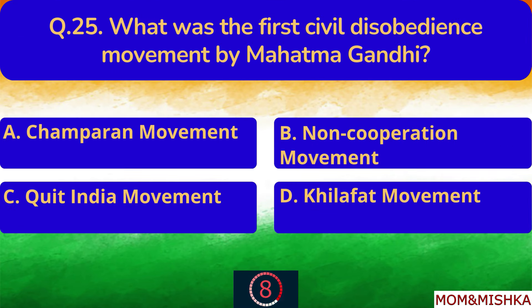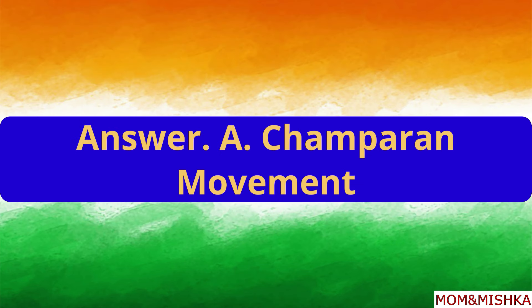What was the first civil disobedience movement by Mahatma Gandhi? Champaran movement. Option A.